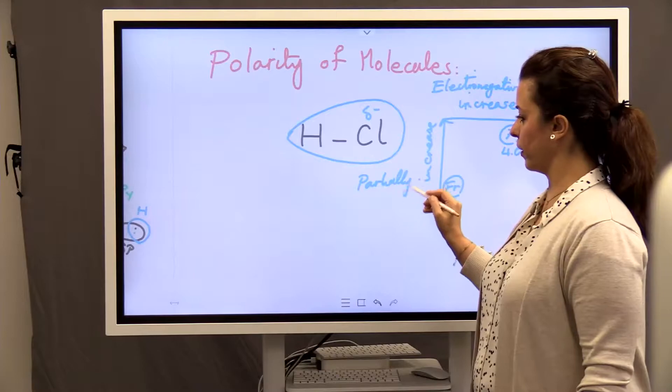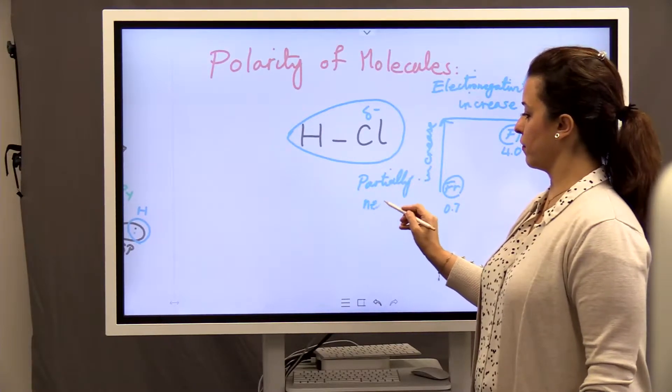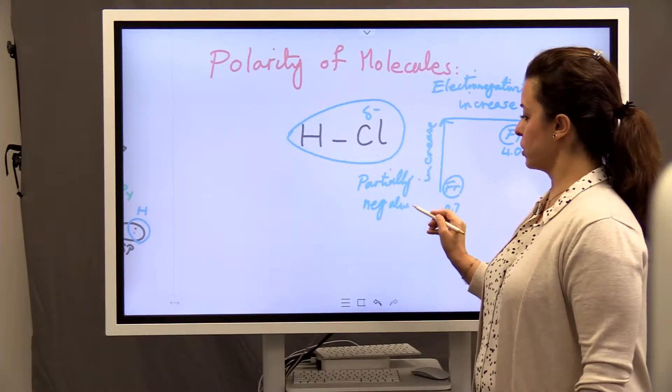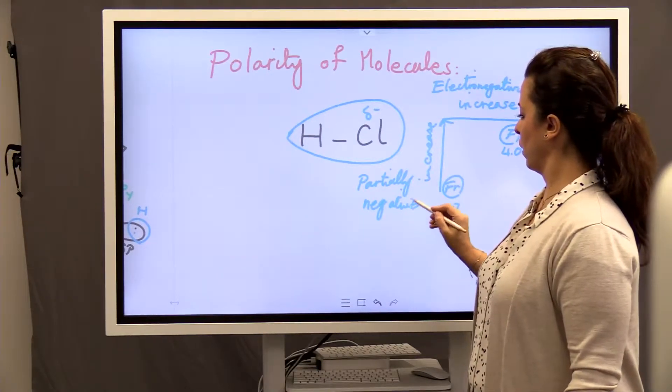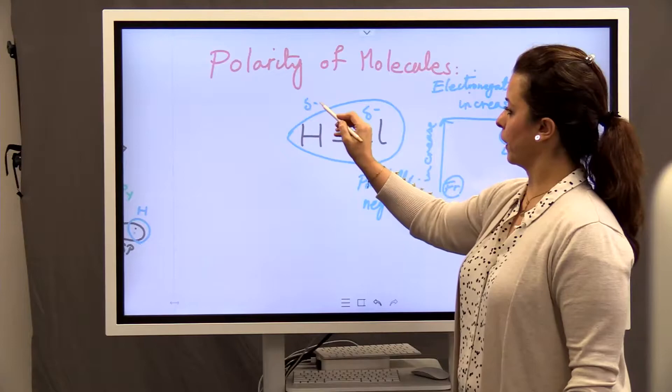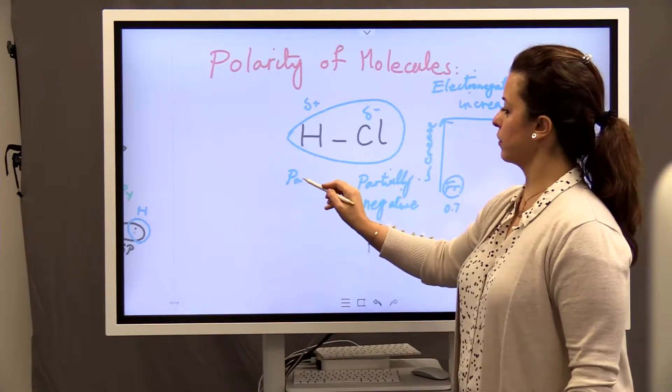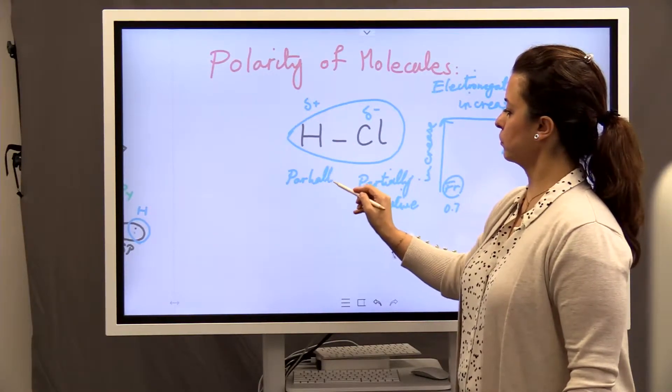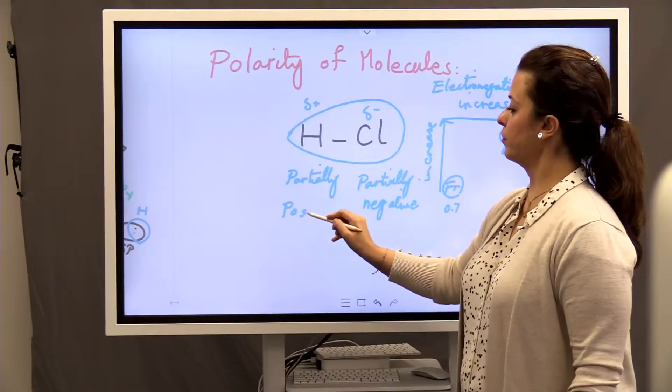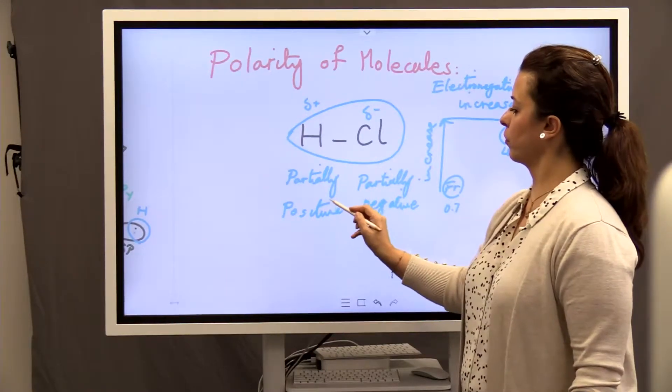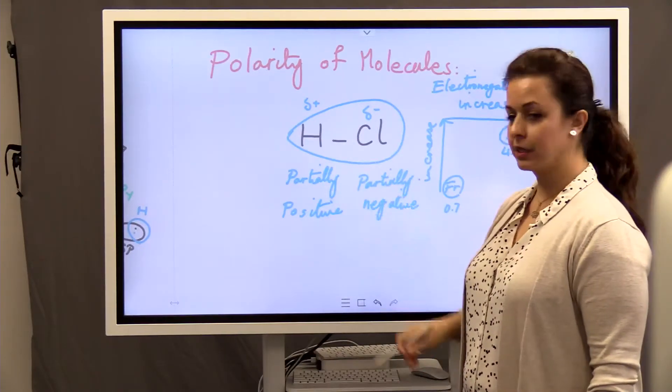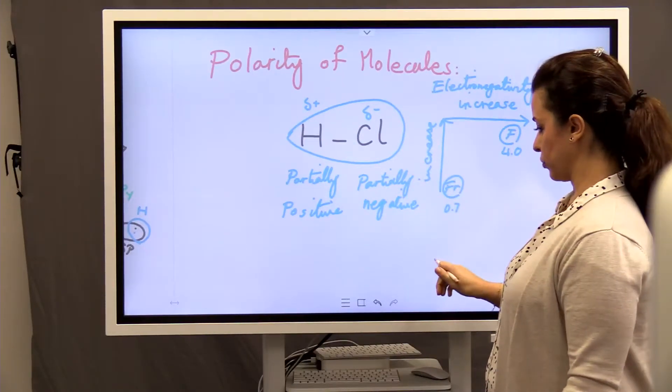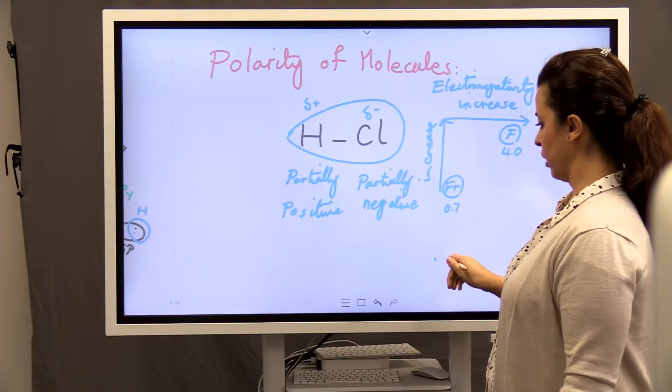You remember, we talked about polarity of bonds. Partially negative. And over hydrogen, what do we call it? Partially positive. Right? Okay. Now, such a bond is polar because the concentration of electrons is over chlorine.